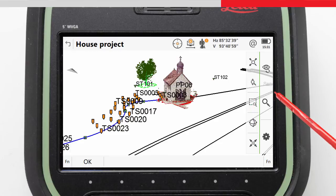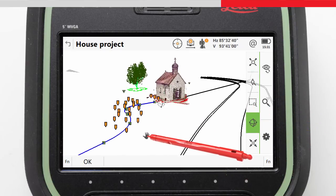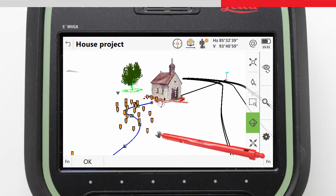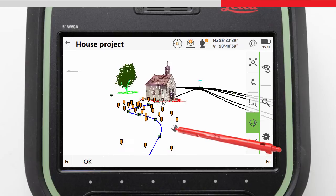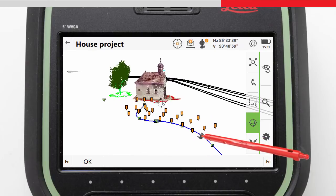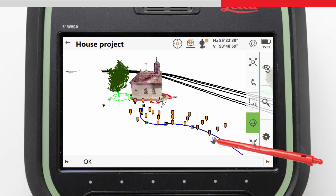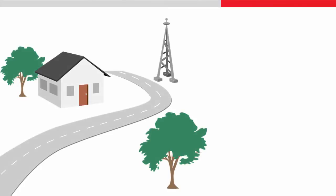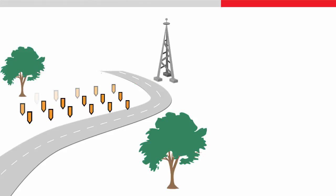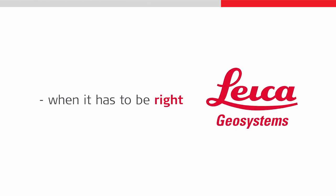We have seen in this video how to stake a line with a slope, and had an overview of the powerful features and settings available in the Stake to Line app. Other videos will continue with this house project to show staking a line or a segment of a line, and also staking a grid of points, all using the Stake to Line app. Thanks for watching.